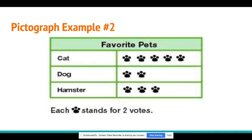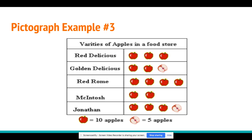Let's look at one last example. This example shows us the varieties of apples in a food store — that's our title. Our labels are our different types of apples: we have Red Delicious, Golden Delicious, Red Roam, Macintosh, and Jonathan. We have apple symbols that represent the number of apples in the store. But look at this one — there's something different. We have whole apples and then we have half of an apple. A whole apple represents 10 apples, but if it's a half, it only represents half of 10, which is five.